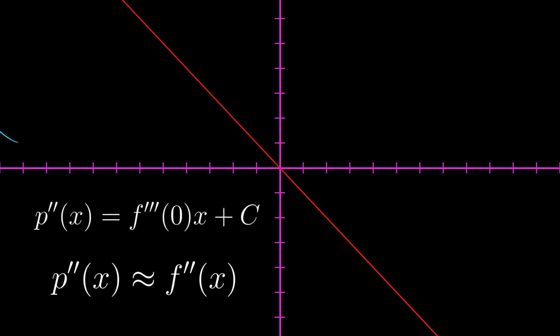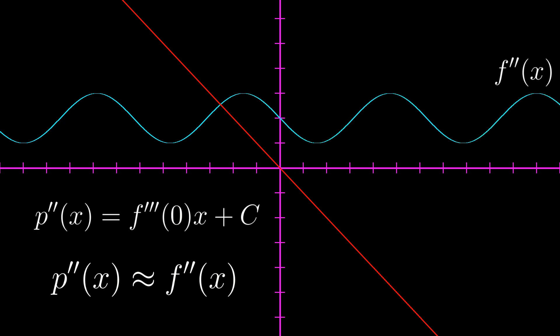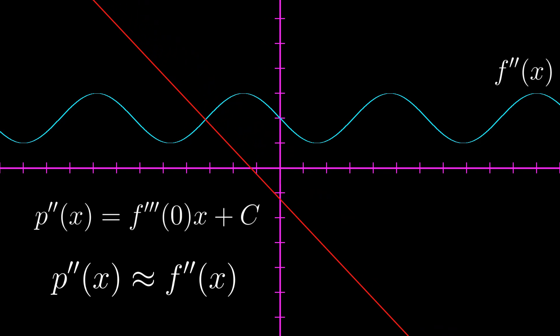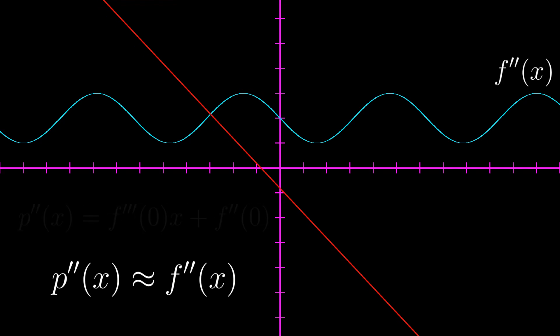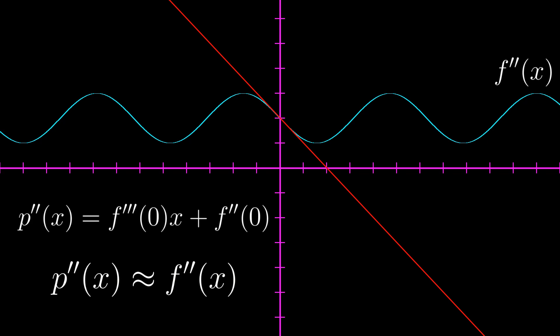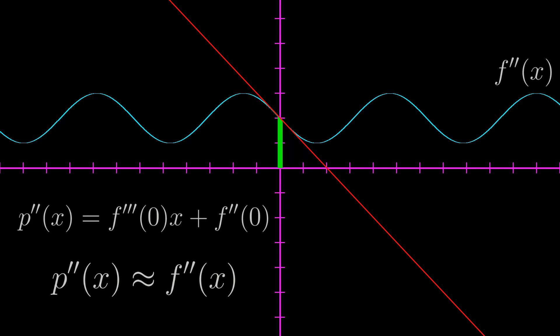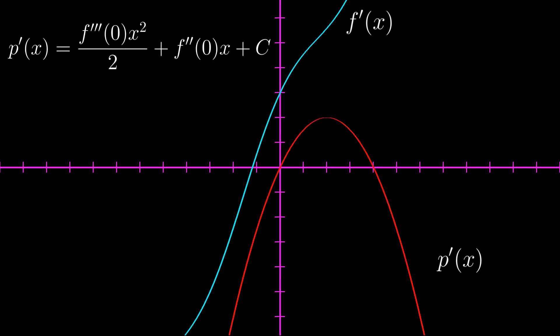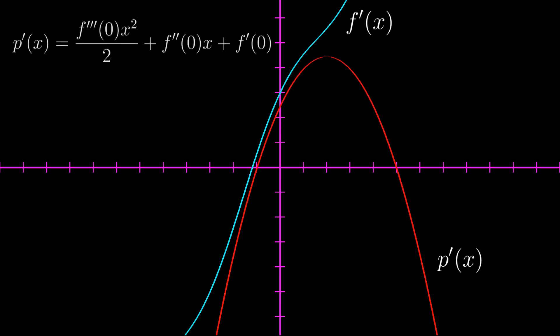Applying our idea of functions having equivalent nth derivatives again, this second derivative should now be equivalent to the second derivative of f. We have a freedom of choice with the plus c. In order to make the second derivative of p as similar to the second derivative of f around x is equal to 0, we set c equal to the second derivative of f at 0. This ensures the error function approaches 0. Taking the integral again, we get: the first derivative of p equals the third derivative of f at 0 times x squared divided by 2, plus the second derivative of f at 0 times x plus c. We then set c equal to the first derivative of f at 0.